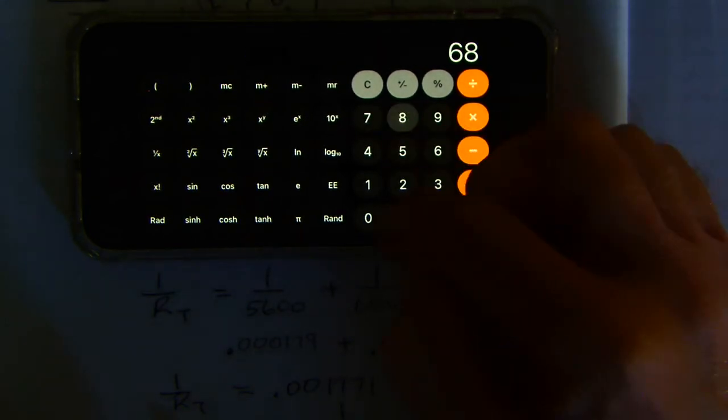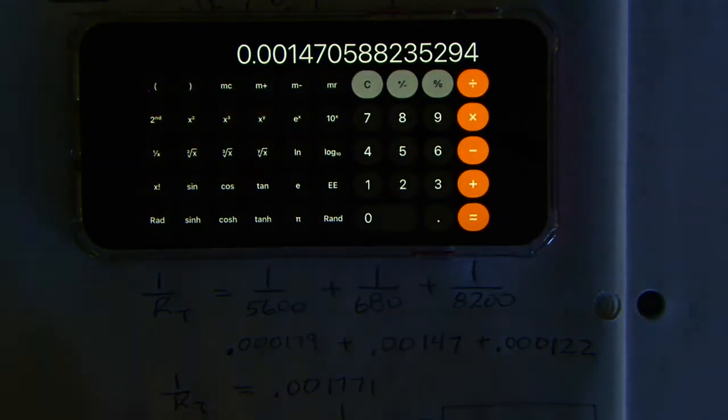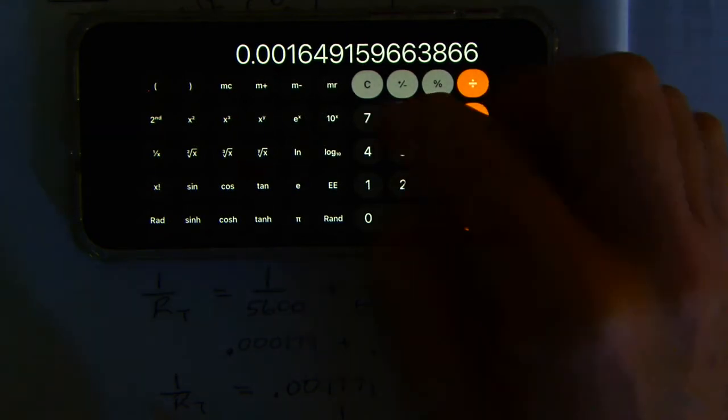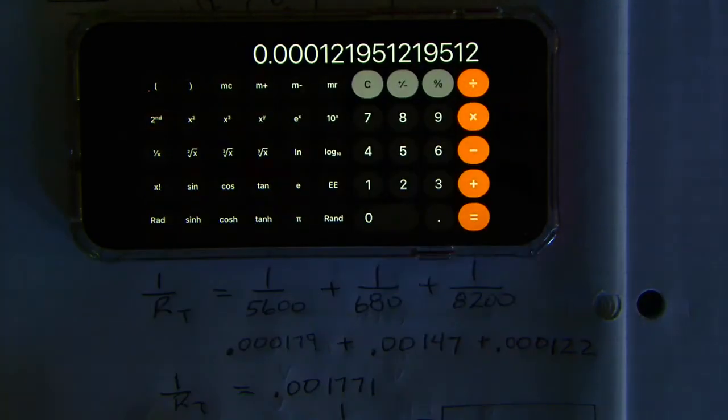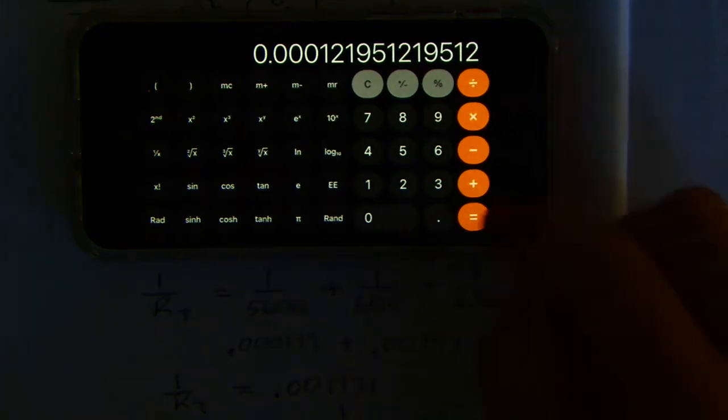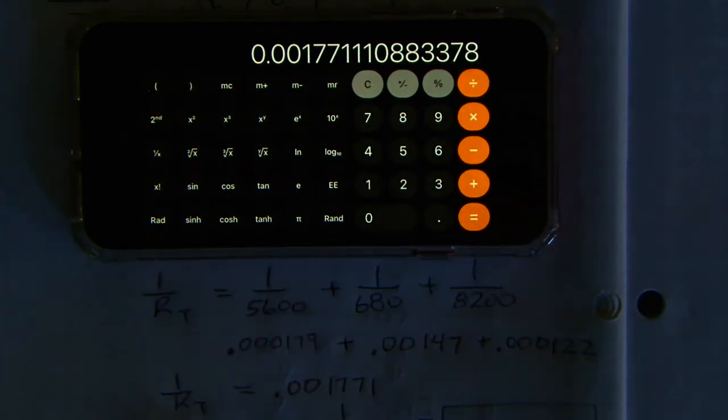Plus 680, 1 over x, that gives you the inverse of that value. Plus 8200, 1 over x, that gives you the inverse of that value. And then you have added those all together to get that value.